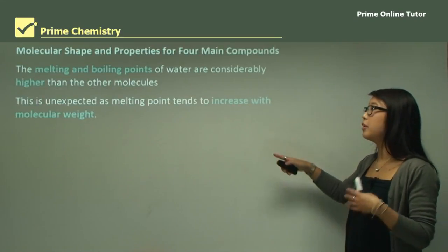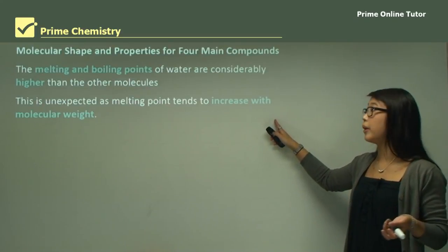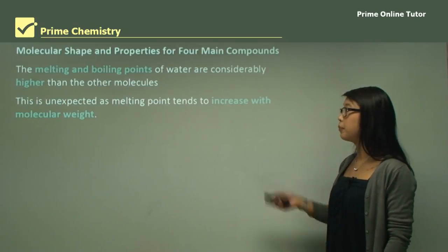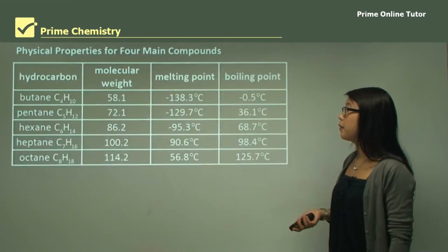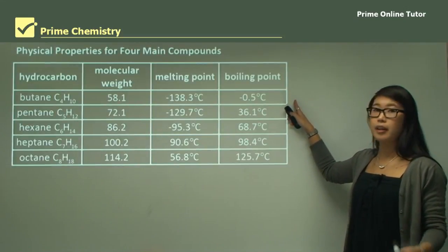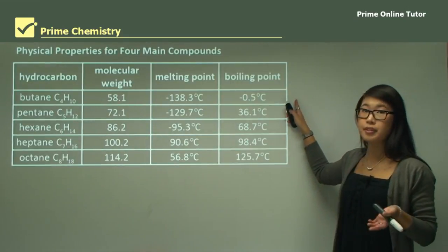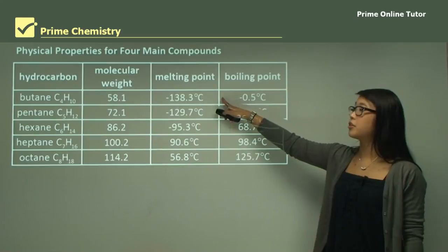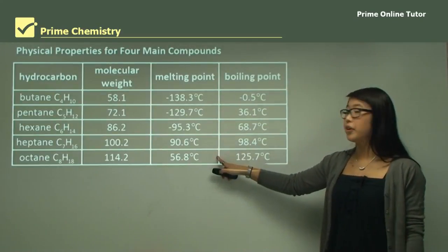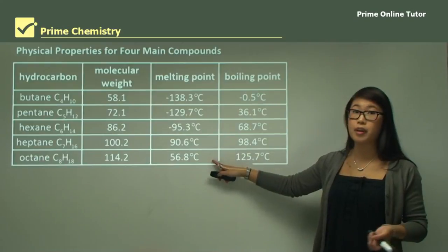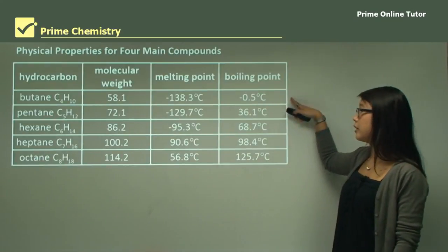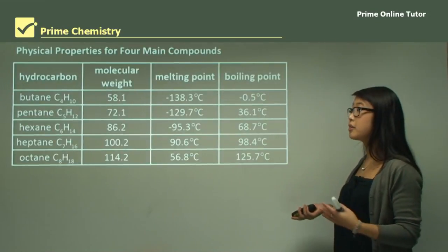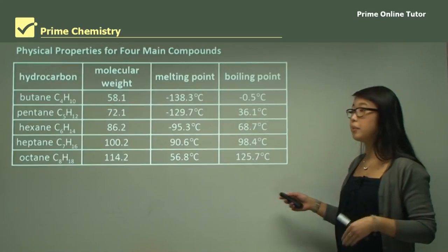This is unexpected because generally when we increase molecular weight it leads to an increase in boiling point and melting point. In hydrocarbons, we can see that increasing molecular weight gives an increase in melting point — from very low negative temperatures to a positive temperature. This trend applies to both melting point and boiling point. The general trend is: increase the weight, increase the melting and boiling point temperatures.